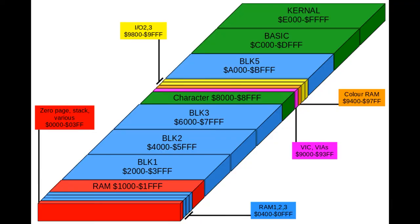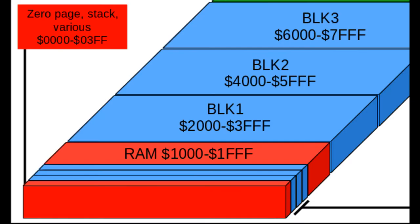Memory access in the VIC-20 was broken into blocks of 8K. Block 0 contained 0 page, the 5K built-in RAM, the CPU stack, and the kernel and basic work areas.